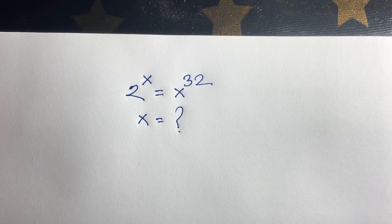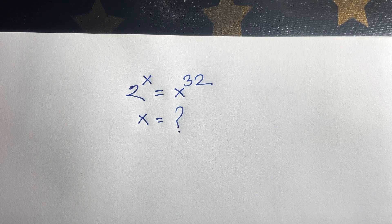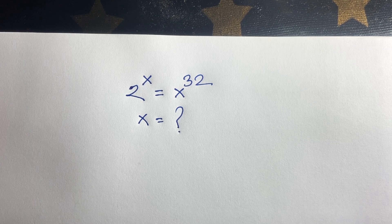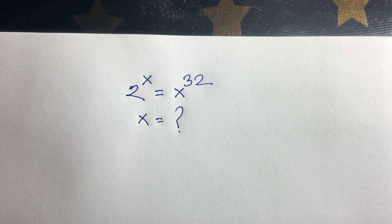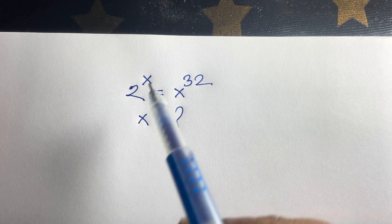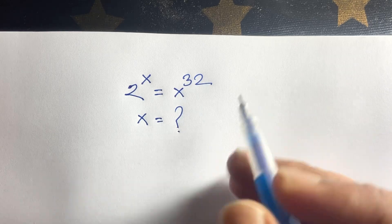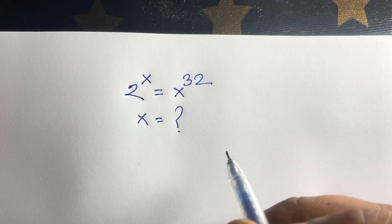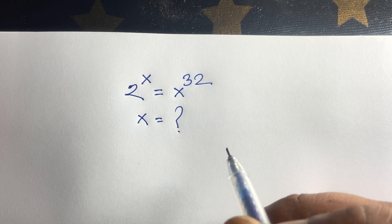Hello everyone. In this video, we have solved this German Math Olympiad question: 2 to the power x is equal to x to the power 32. We'll find out what is the value of x in this exponential equation. It is an interesting math problem. So how to solve this question?